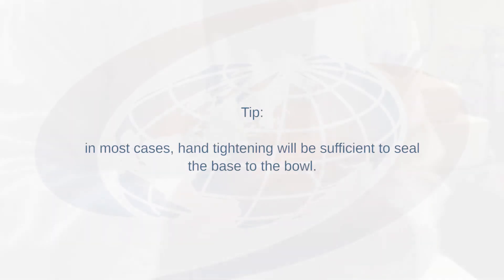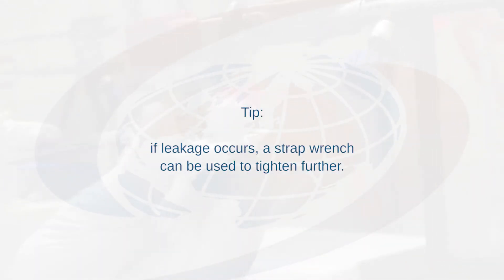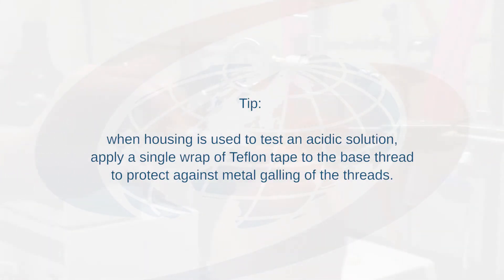In most cases, hand tightening will be sufficient to seal the base to the bowl. If leakage occurs, a strap wrench can be used to tighten further. When housing is used to test an acidic solution, apply a single wrap of Teflon tape to the base thread to protect against metal galling.